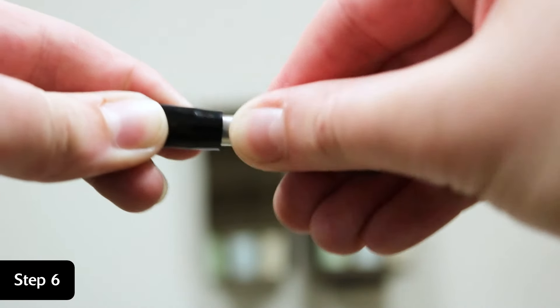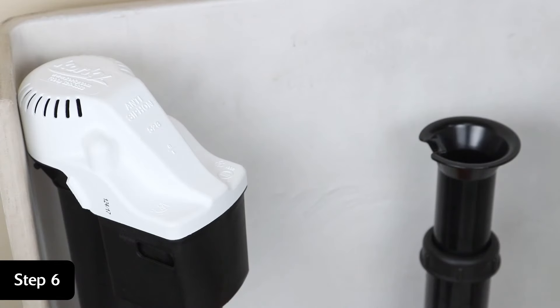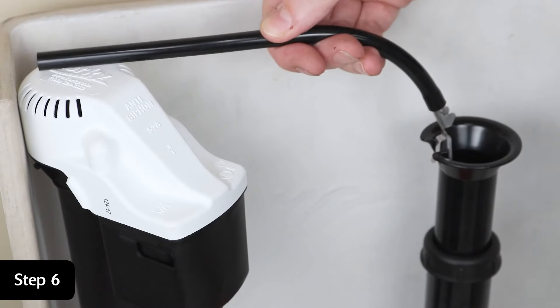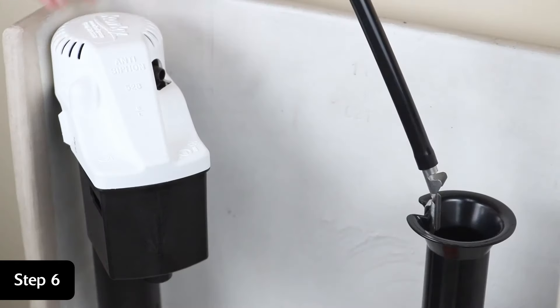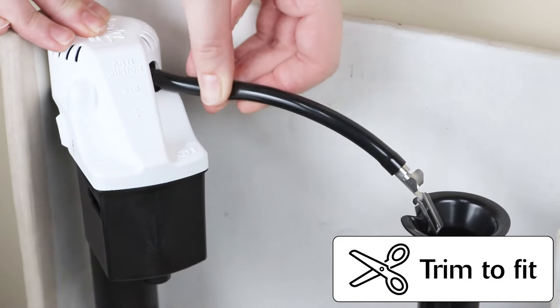Insert the metal clip into the refill tube and attach the clip to the flush valve. Make sure the refill tube has a direct path to the fill valve. Trim the tube if needed and then attach to the fill valve.